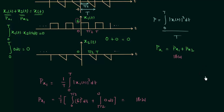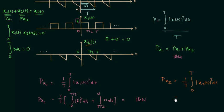Now we will calculate Px2, which is a little more complicated than Px1. Px2 = (1/T)·∫₀ᵀ |x2(t)|² dt. We break the integral into two parts: from 0 to T/2, x2(t) is zero, so that part contributes 0. From T/2 to T, x2(t) is a straight line, so we need its equation.